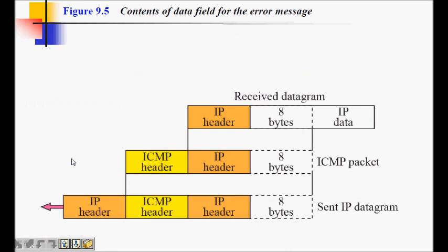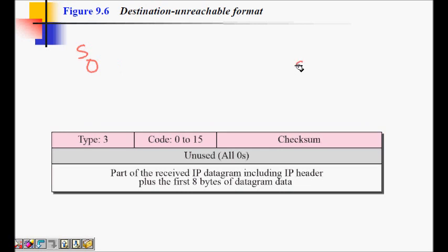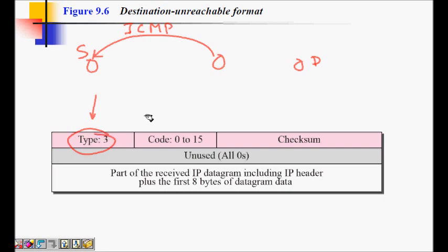The first error type we look at is destination unreachable. When a source sends to a destination and some router finds that the destination is unreachable, it sends an ICMP packet back to the source with the type field set to 3, which indicates destination unreachable. The code is a 4-bit number ranging from 0 to 15, indicating whether the error originated from the destination itself or from an intermediate router.